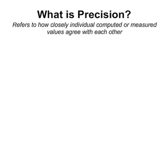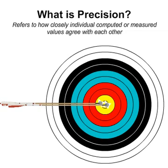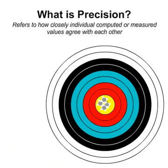Precision refers to how closely individual computed or measured values agree with each other. If a large number of arrows are shot, precision would be the size of the arrow cluster. When all arrows are tightly grouped together, the cluster is considered precise since they are all stuck close to the same spot.